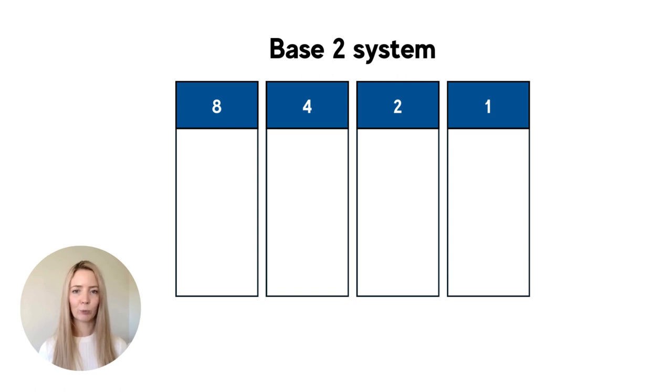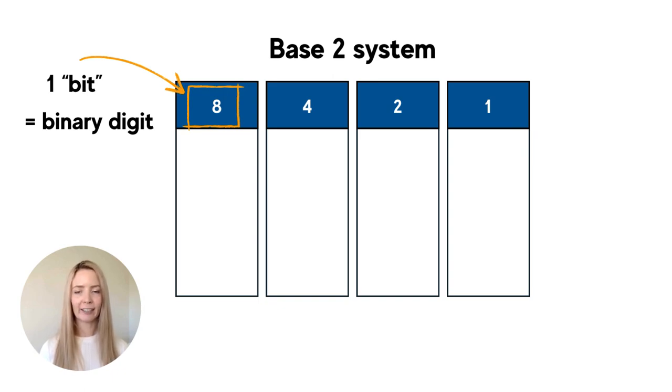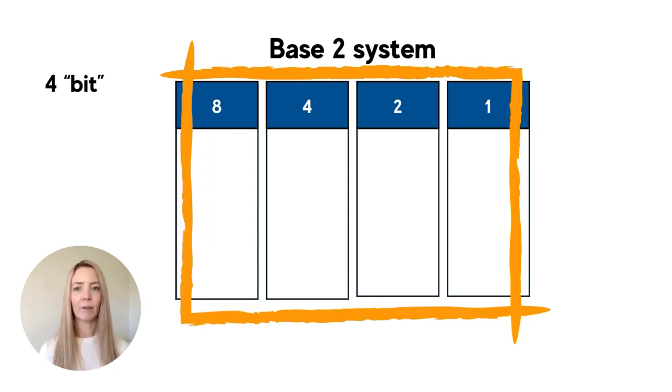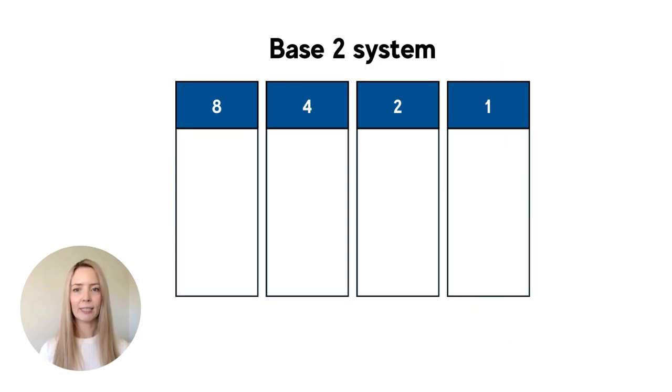Each of these columns is what we call a bit, which is short for binary digit. This is the smallest unit of data in a computer. Here we have a four bit binary number. Computers represent bits as either a zero or one, and you'll see what I mean when we work through this next example. Just like we did the first time, if I have no items to count, we're going to put zeros in each column to indicate that we have nothing.